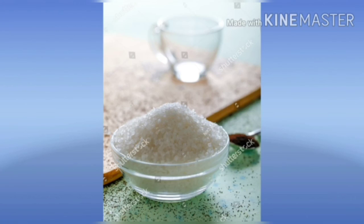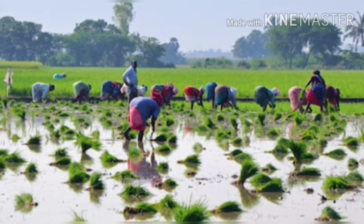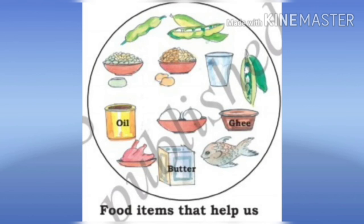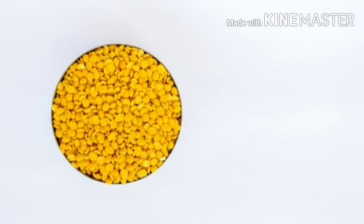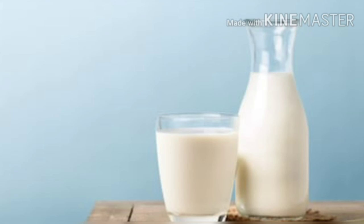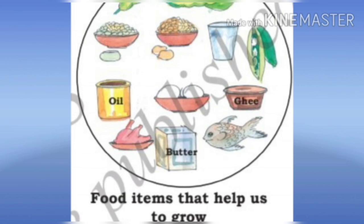Sugar, jaggery, etc. give us strength and energy to do our work. Which are the food items that help us to grow? Pulses like toor dal, cow gram, and black gram, milk, egg, and meat help us to grow as they have proteins in them.